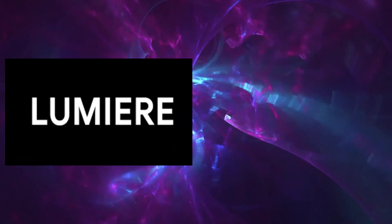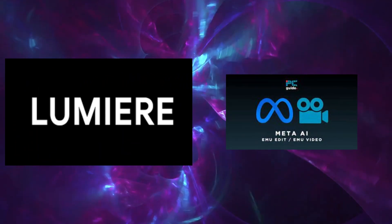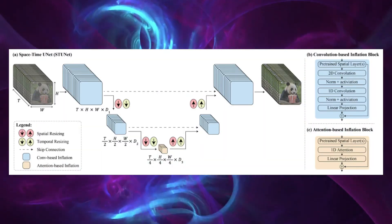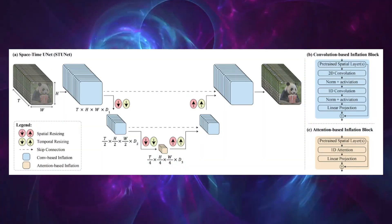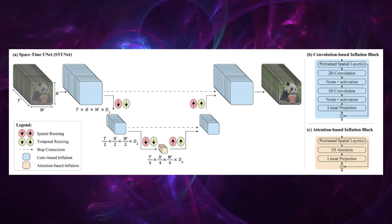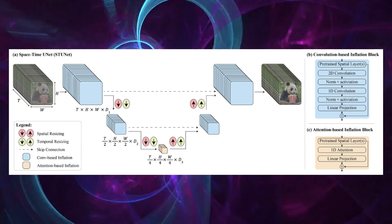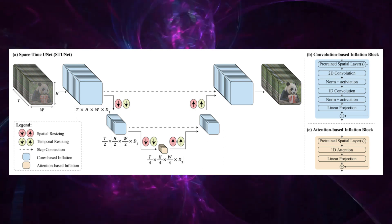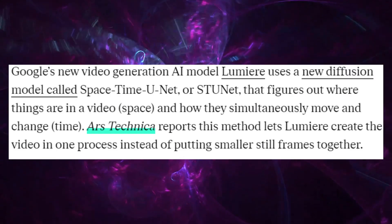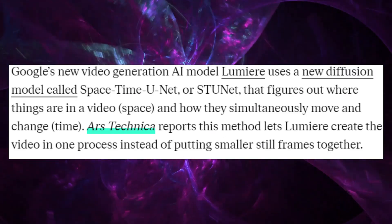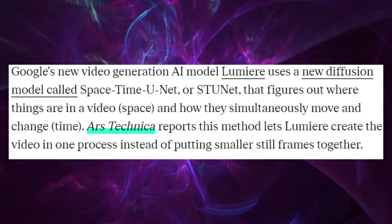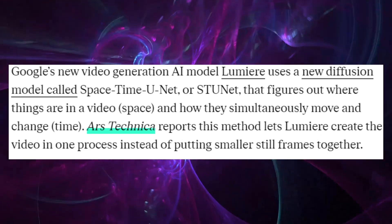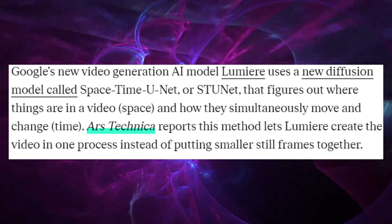Let us see how Google's Lumiere compares to similar counterparts such as Meta's EMU. Lumiere, with its space-time U-Net architecture, excels in creating seamless video sequences from text inputs, emphasizing coherent motion and realistic portrayal of scenes. This model is adept at generating detailed videos that capture the essence of the described narrative, setting a high bar for realism and continuity in AI-generated content.